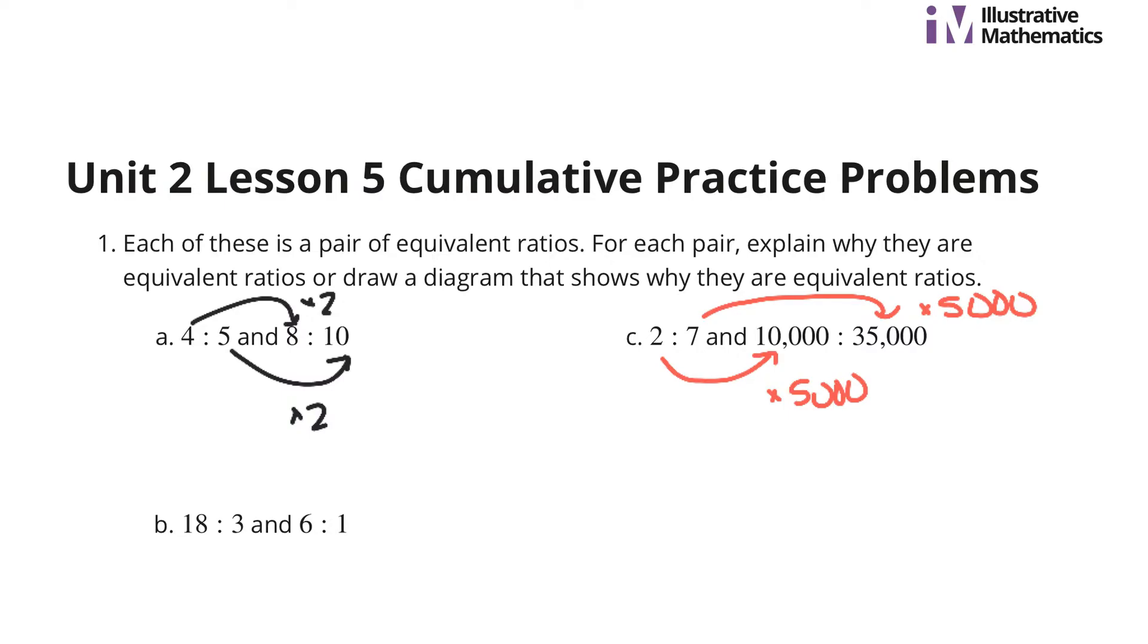18 to 3 and 6 to 1, you know, what are we multiplying by? We're dividing by 3, which is the same thing as multiplying by 1 third here. 3 divided by 3, or times 1 third, gets us to the 1, and so we're multiplying by the same thing, so it is an equivalent ratio.